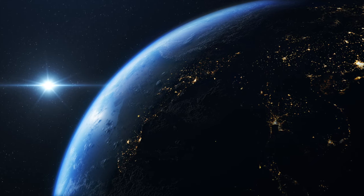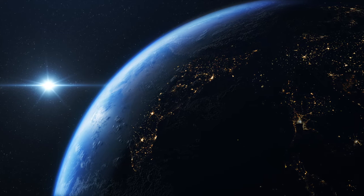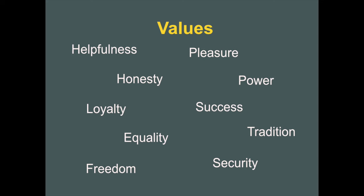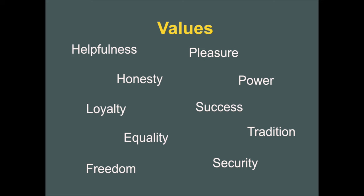Values are, in the social sciences, often defined as abstract ideals that guide our decisions. Researchers in over 80 countries have identified over 50 distinct values, such as helpfulness, honesty, or loyalty, but also other values such as equality, freedom, pleasure, power, success, security, or tradition. So we can see there's quite a variety of values.